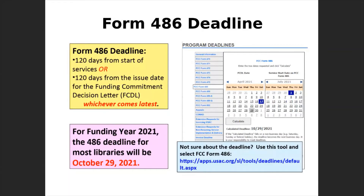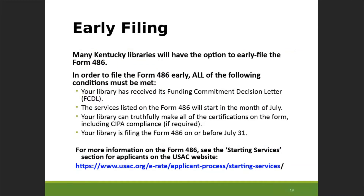The deadline for the form 486 can vary based on when services start and when the funding commitment decision letter was issued. Most library services start on July 1st and most of you will have your funding commitment before then, so the overwhelming majority of Kentucky public libraries will need to file their funding year 2021 form 486 by October 29, 2021. To look up your library's specific deadline, you can use the deadline tool on the USAC website — enter your FCDL date and service start date and it will calculate your deadline.